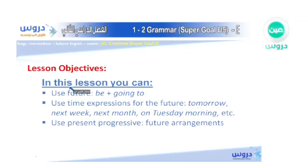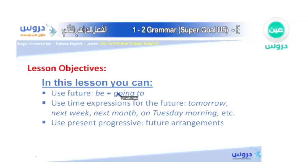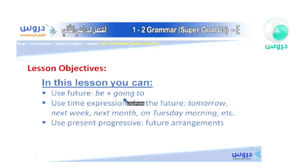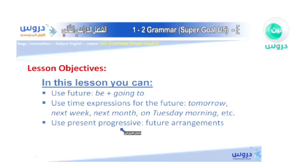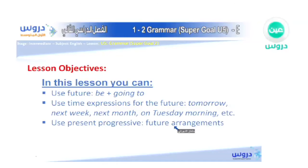First, we have some objectives. In this lesson you will: one, use the future with 'be going to' — for example, am, is, are going to; two, use time expressions for the future — tomorrow, next week, next month, on Tuesday morning, etc.; and three, use the present progressive for future arrangements.